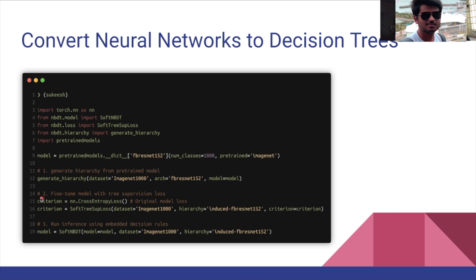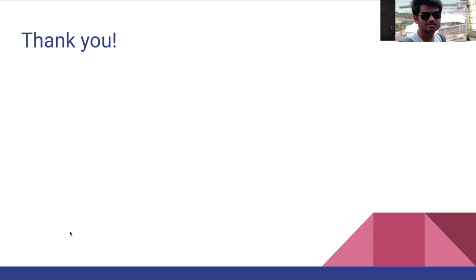To convert existing networks to decision trees, you first generate the hierarchy from a pre-trained model trained on ImageNet. Line 15 is the original neural network loss L_original, and then you apply the soft tree supervision loss. Finally, you run inference on either the soft NBDT or hard NBDT depending on how you want the decisions to be structured. That's it — thank you for listening, please like, share, and subscribe.